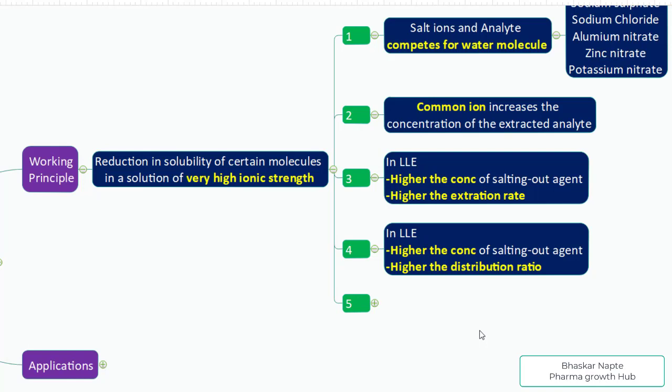The next point is also about liquid-liquid extraction: higher the concentration of salting out agent, higher the distribution ratio. The distribution ratio is the concentration of your analyte in the organic layer divided by the concentration of your analyte in the aqueous layer. At higher concentration of salting out agent, the concentration of analyte in the organic layer increases, raising the distribution ratio and extraction efficiency — so adding more salting out agent enhances extraction efficiency.